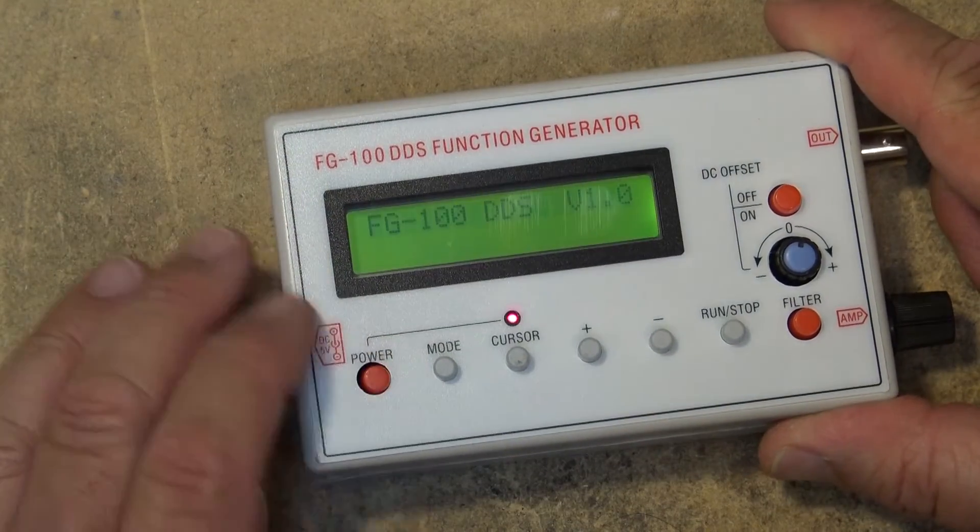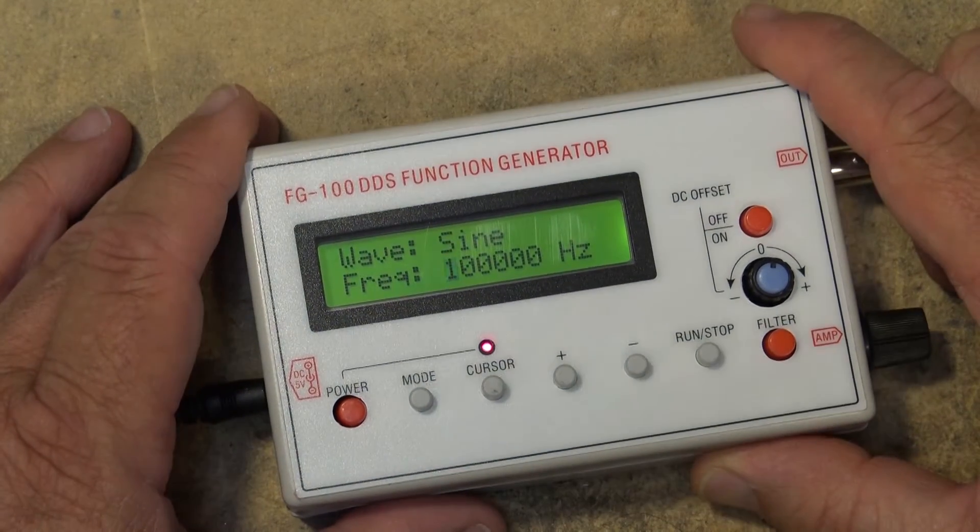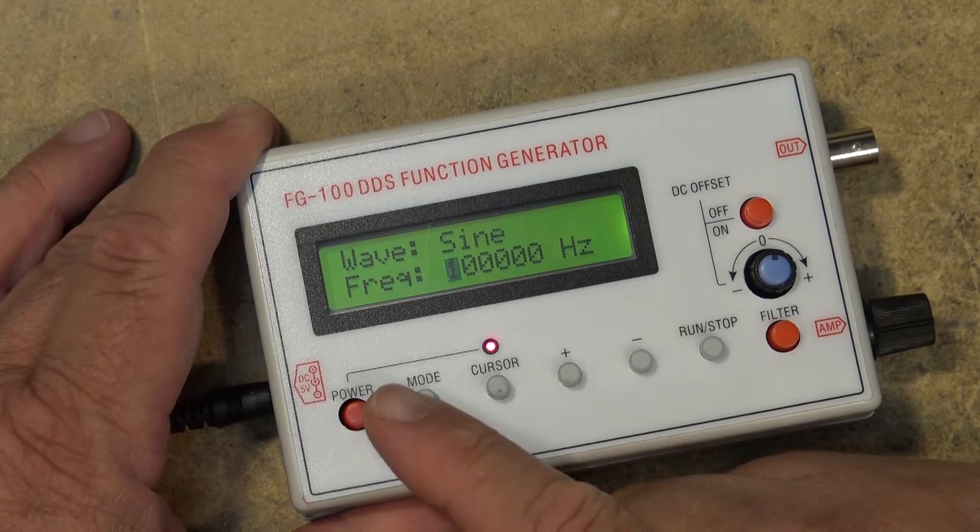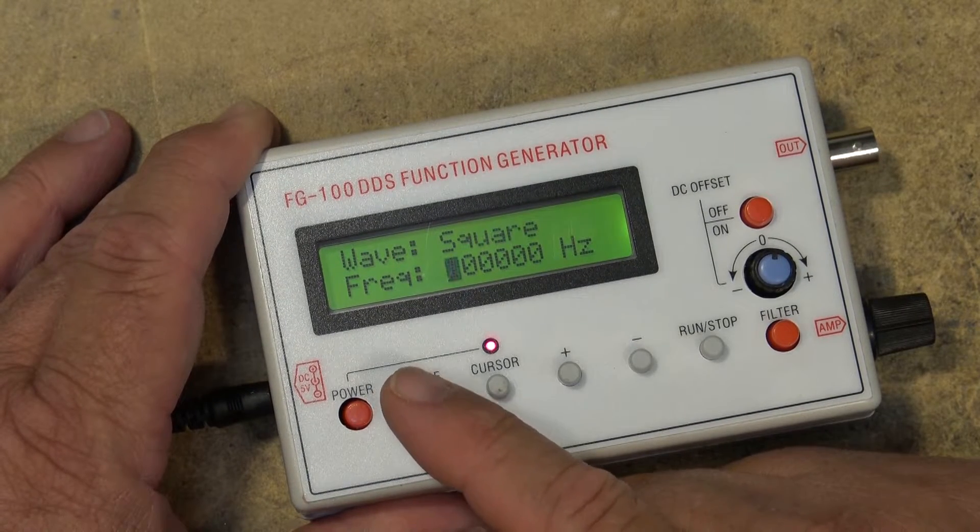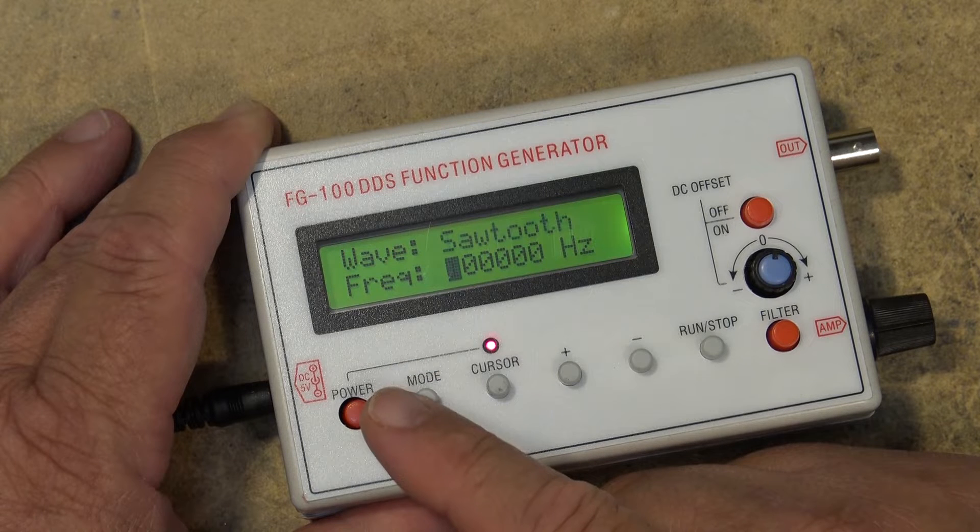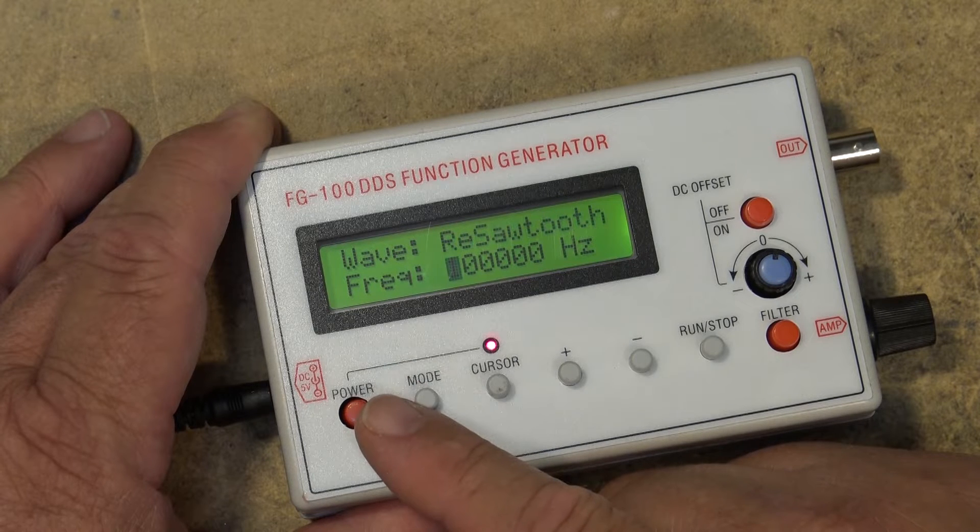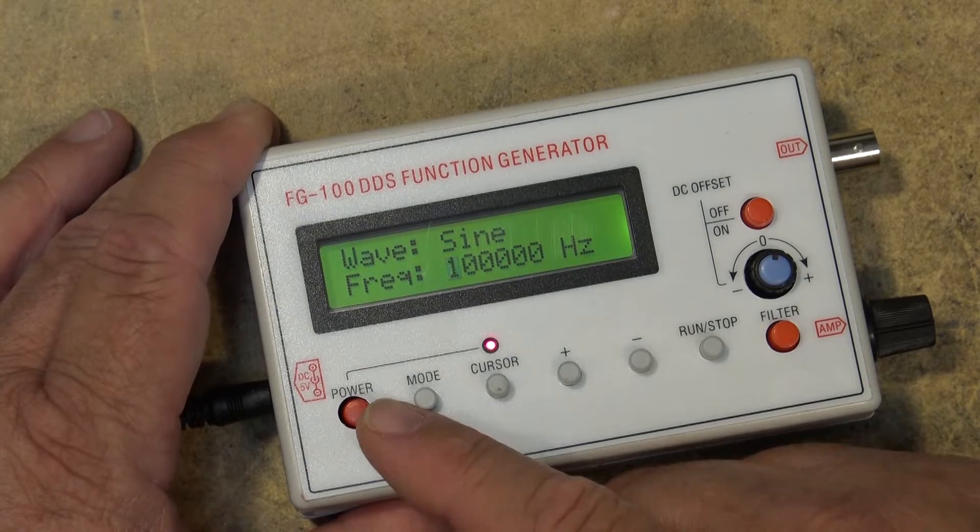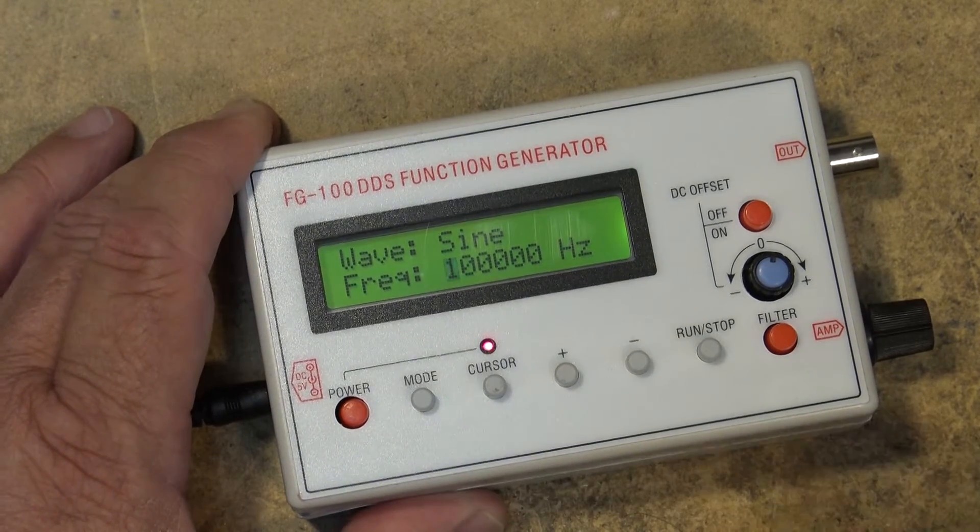So I hit the power button and basically we can create a sine wave, a square wave, or a triangle wave, or a sawtooth wave, or a re-sawtooth. So it'll generate multiple different types of signals.